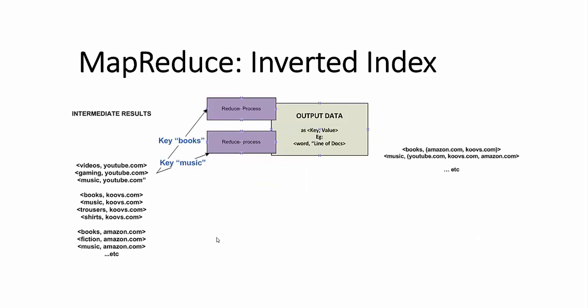The next step in MapReduce is to take the intermediate results and transfer to reducers based on the same key. For example, the intermediate result consists of a keyword followed by a website address.